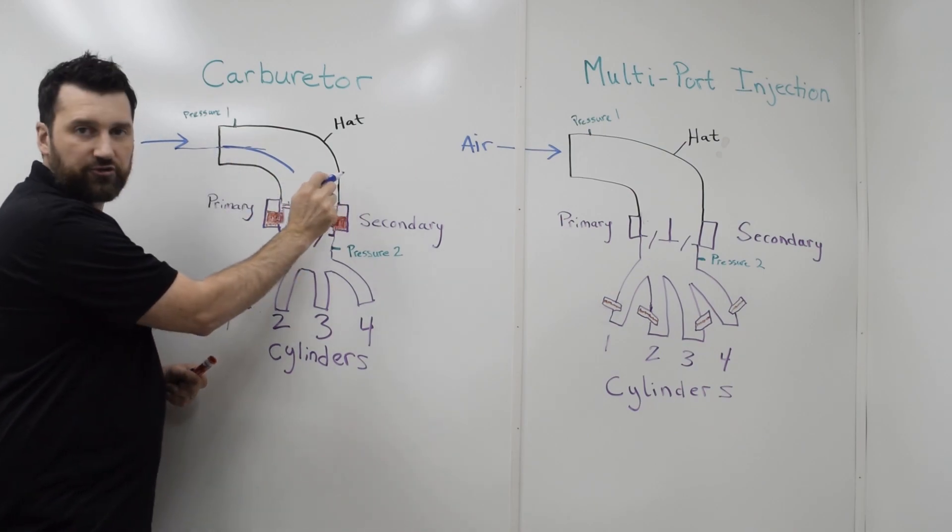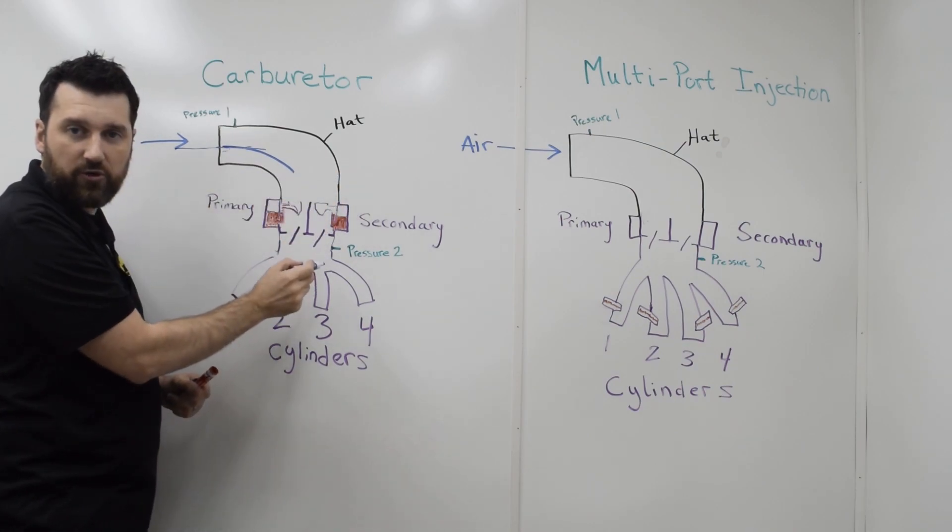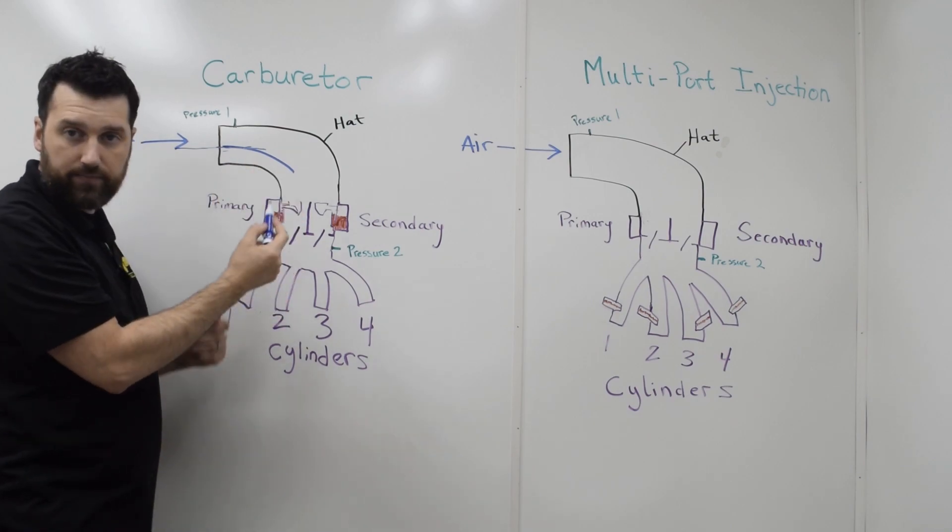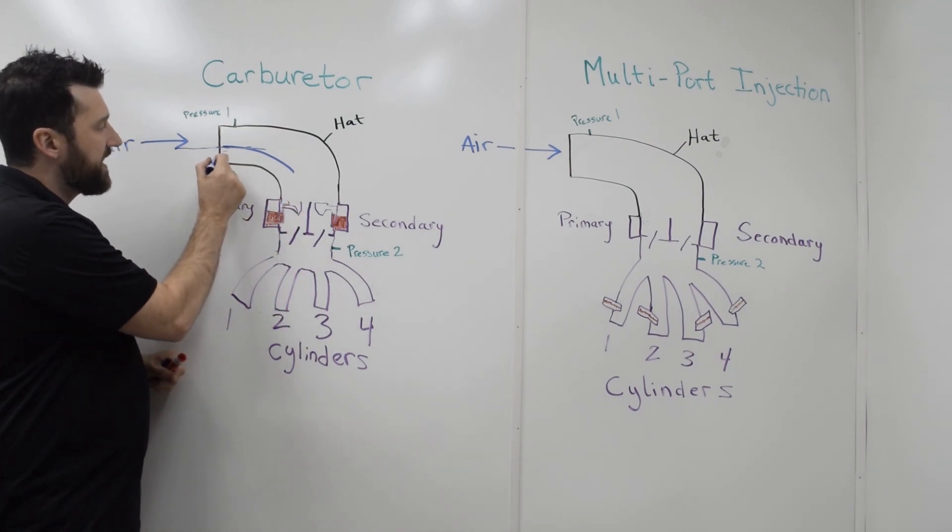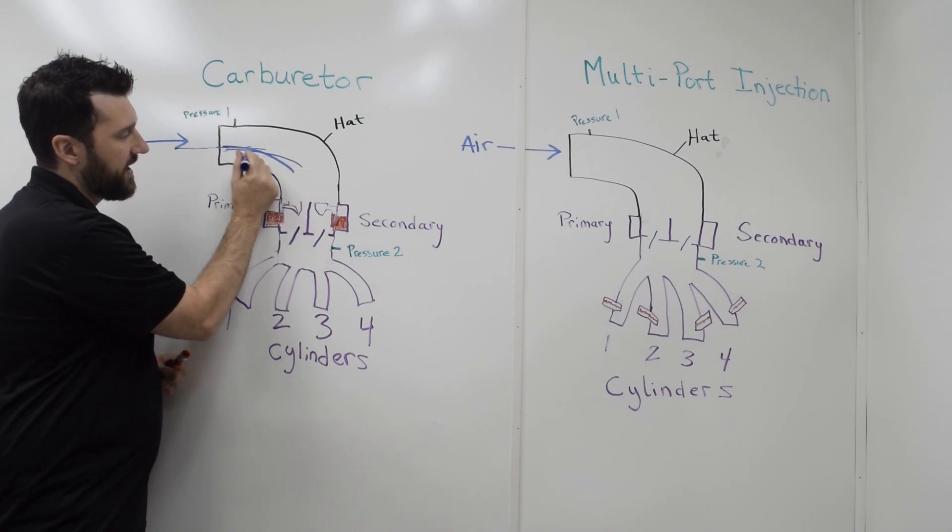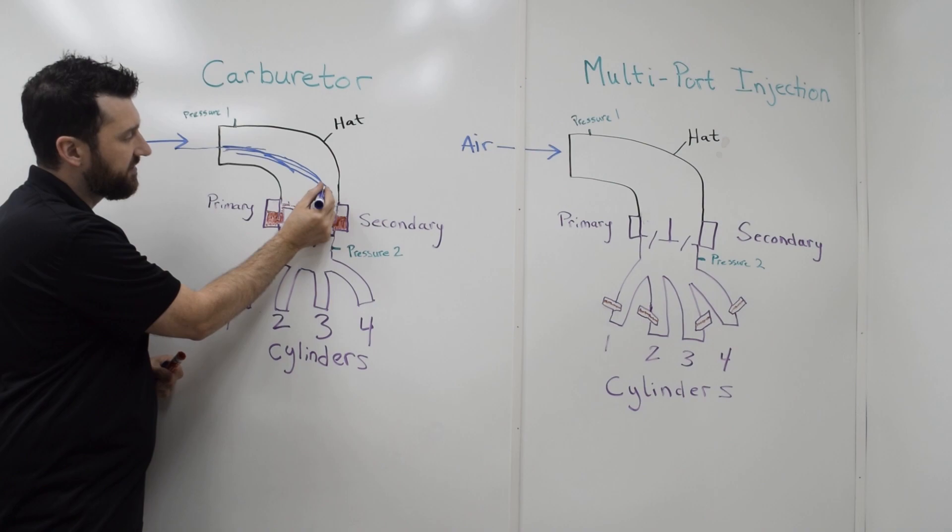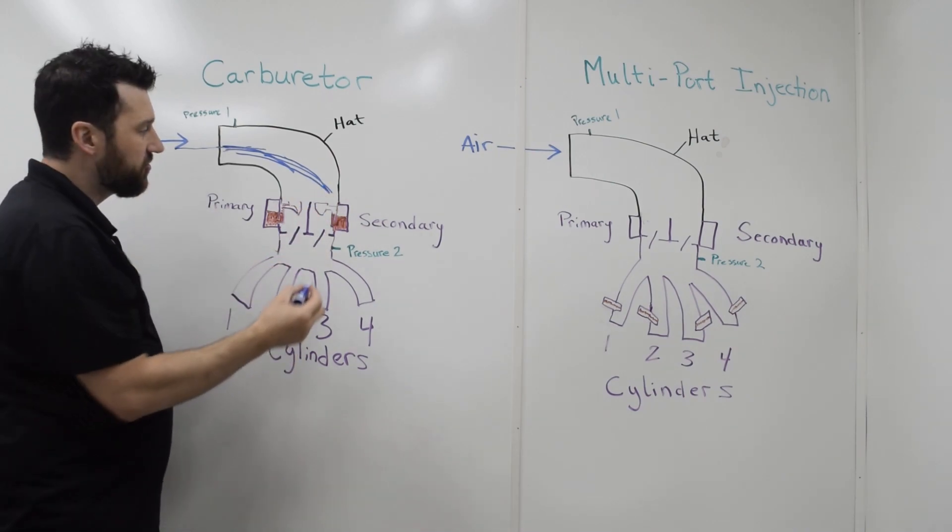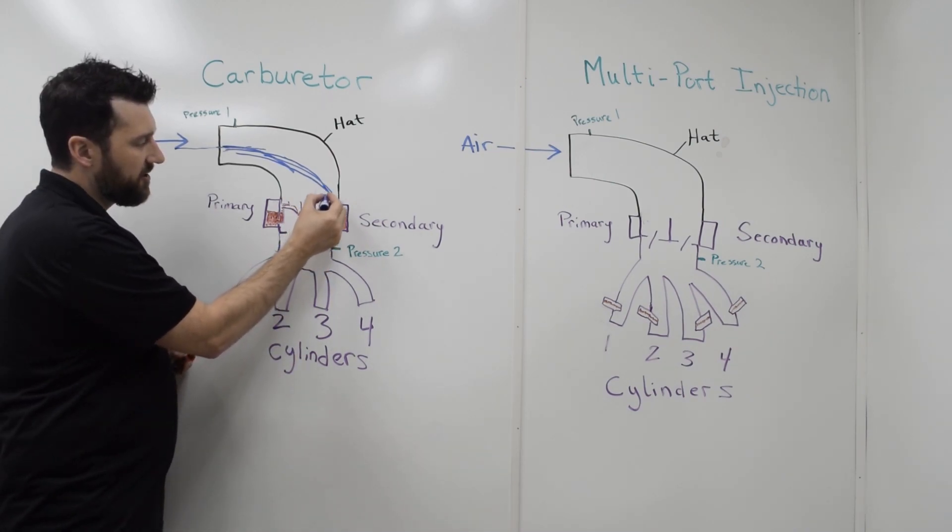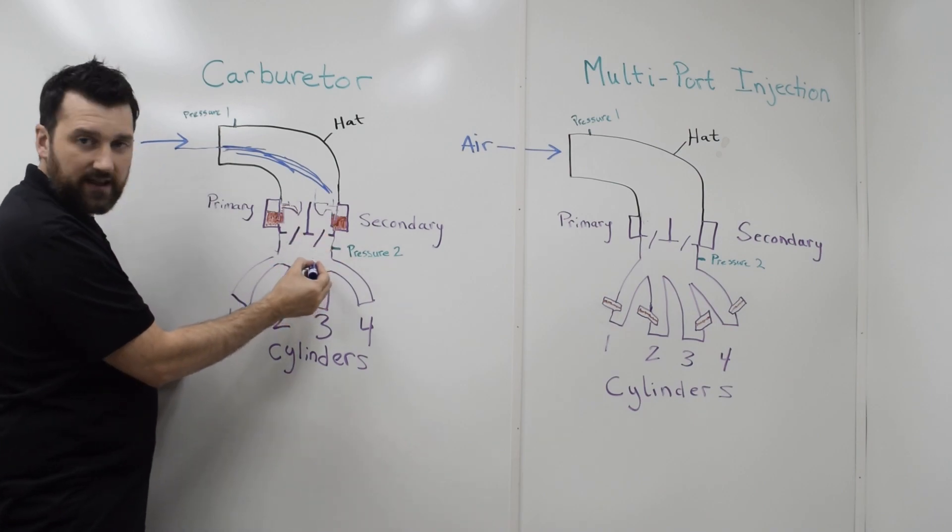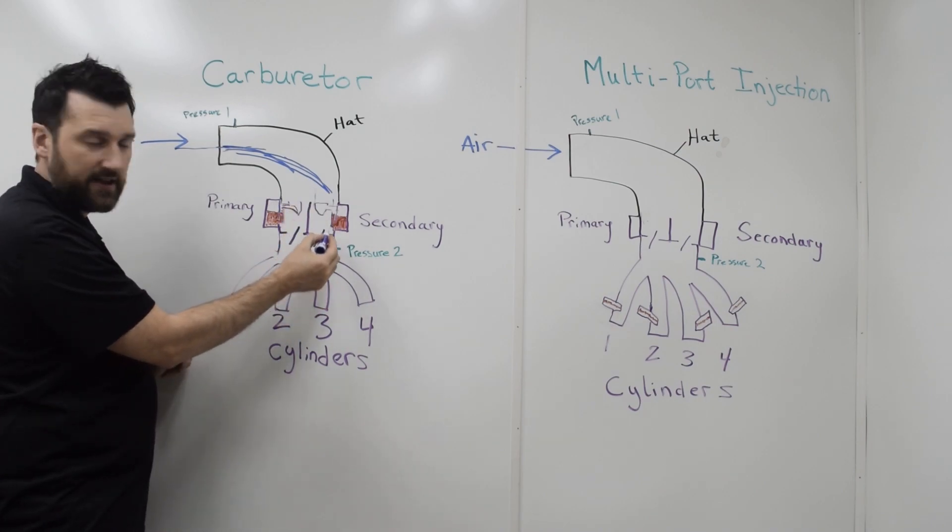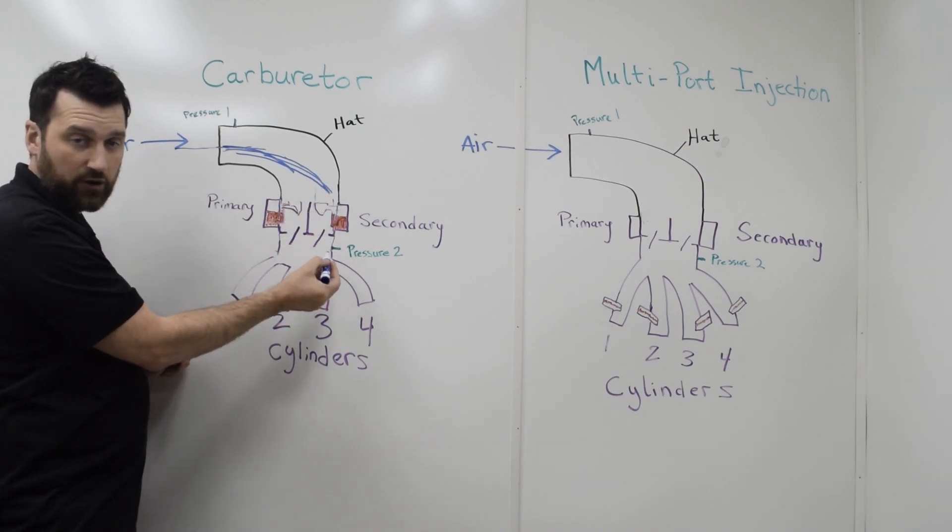It wants to continue to go straight or continue to follow the lower pressure area. So as this air comes in, the air tends to shoot and run into the back wall of this hat. By doing that, most of the air is trying to enter into the intake plenum through the secondary venturi of the carburetor.